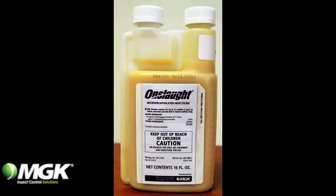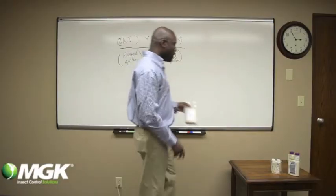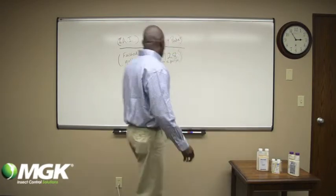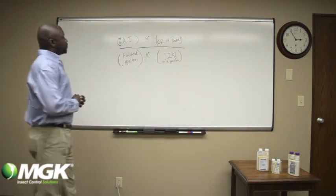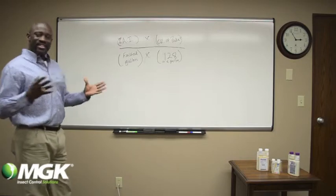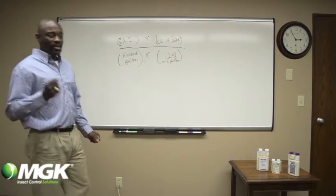The first product is Onslaught Microencapsulated Insecticide. What we have on the board is a formula that works for every product and it's an easy way of calculating the final concentration.